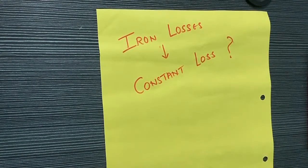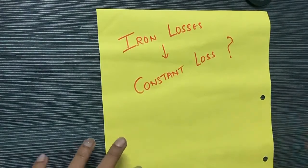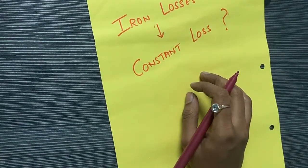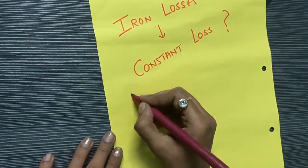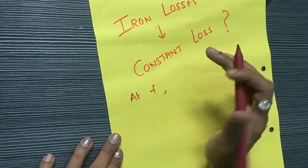But how are the iron losses considered as constant losses? Why? Because at normal operation, we can say that iron losses are always voltage dependent. At a constant frequency, that is at constant F, the iron losses